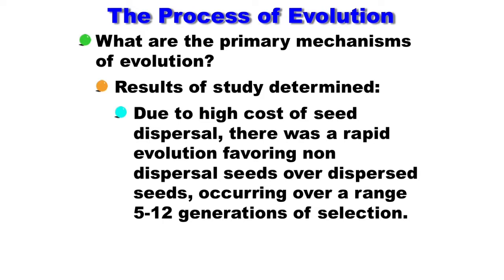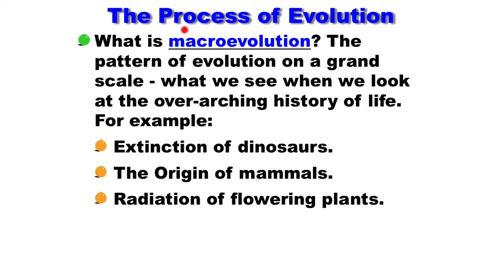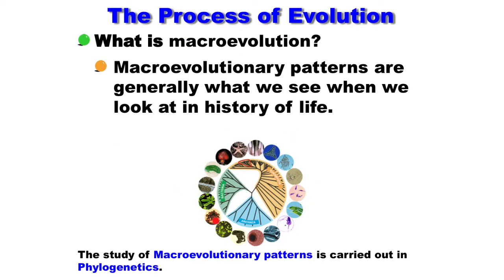Macroevolution is a pattern of evolution on the grand scale — what we see when we look at the overarching history of life. For example, extinction of dinosaurs, the origin of mammals, or the radiation of flowering plants. Whenever we see phylogenetic trees and the tree of life, we are talking about macroevolution. Macroevolutionary patterns are generally what we see when we look at the history of life, and the study of these patterns is carried out in phylogenetics.